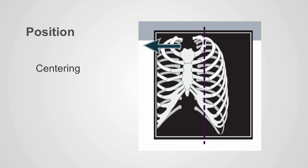On a good quality chest x-ray examination, the entire thorax should be visible and should be positioned in the center of the image. The image should include the apices of the lungs, the costophrenic angles, the spine, and the sternum. The medial edge of the scapula should lie lateral to the chest wall. The patient's arms and chin should not overlap the upper lung fields.